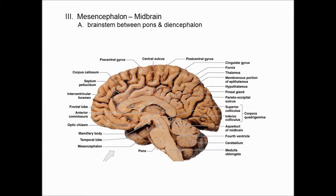B is the correct answer. There are a lot of GI reflexes with these types of contractual names. Gastro refers to the receptor and colic to the effector. Stretch of the stomach causes an increase in colonic motility, moving food along the conveyor belt. We'll talk about these second semester — it's a visceral-visceral reflex.